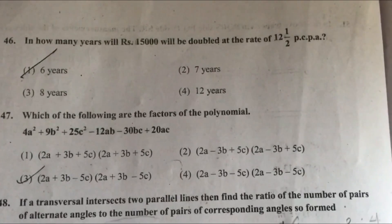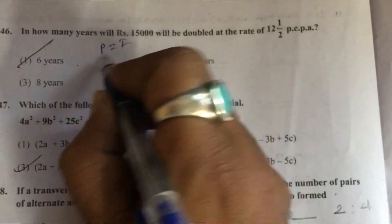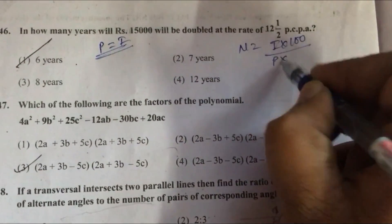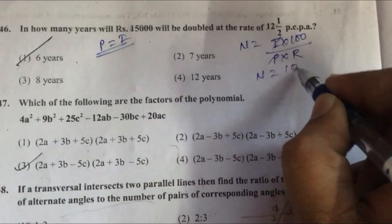Question 46: In how many years will 15,000 be doubled at the rate of 12.5% p.a.? Here principal and interest are same. By using this formula, this will be cancelled, n equals 100 upon rate.